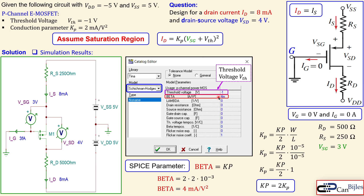This concludes example number five on MOSFET circuits, specifically the p-channel enhancement MOSFET. We calculated the required resistor values RS and RD for a specified drain current and source-to-drain voltage VSD. If you have any questions, please let me know and I will answer them as soon as possible. See you next time — take care.